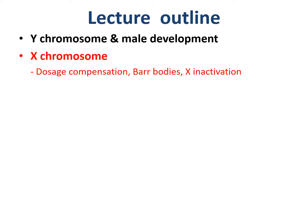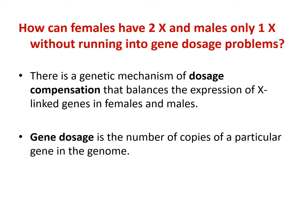Now let's discuss the X chromosome and the phenomenon called X inactivation. How can females have two X chromosomes and males have only one X, without running into a gene dosage problem? Gene dosage means how many copies of genes we have per genome. There is a genetic mechanism called dosage compensation, which balances expression of X-linked genes in females and in males.